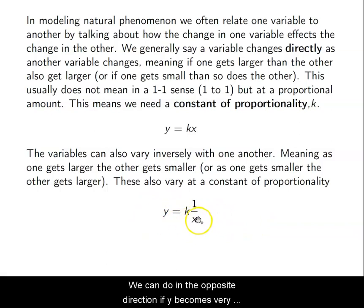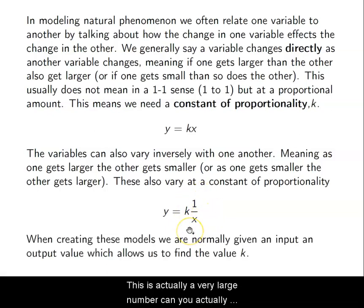And we can do it in the opposite direction. If x becomes very small, y becomes very large. If this is 1 divided by 0.00001, this is actually a very large number. We actually have an example, so let's go through this. When we're creating these models, we're normally given an input and an output value, which allows us to find the value of k.